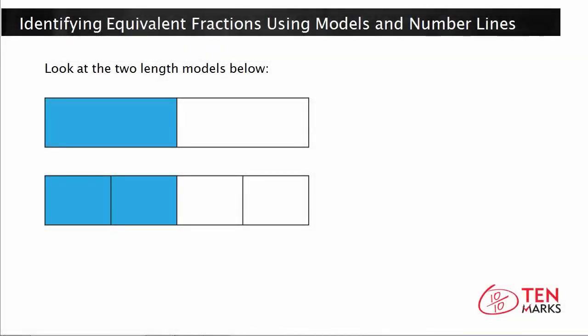In this lesson, we'll learn about equivalent fractions. Look at the two length models below. Here in the top model, the whole is divided into two equal parts, and one of those parts is shaded. That means the fraction shown here is one half.